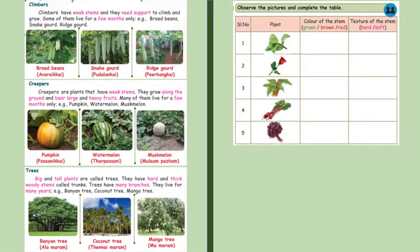Here we need to observe the picture and complete the table. They have given us a plant and we need to write the color and texture of the stem. Mint: brown and soft. Rose: green and hard. Neem: brown and hard. Beetroot: red and soft. Kirei: red and soft.